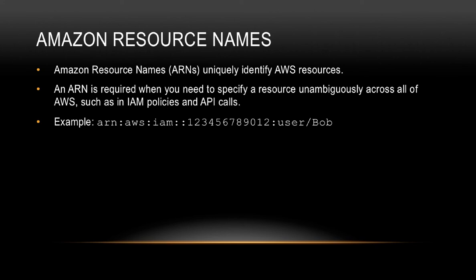Let's now talk about Amazon resource names. Amazon resource names, or ARNs, uniquely identify AWS resources. An ARN is required when you need to specify a resource unambiguously across all of AWS, such as in IAM policies and API calls. For example, let's say you're creating a user called Bob in IAM — how do you uniquely identify Bob in your AWS account? That happens with an Amazon resource name, which could look something like: arn:aws:iam::account-number:user/Bob.